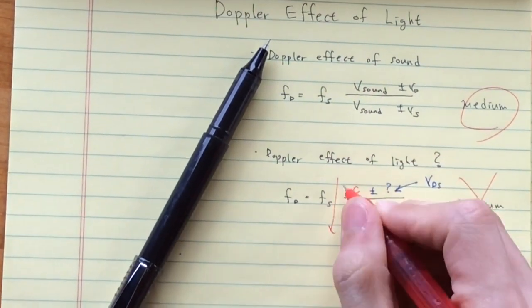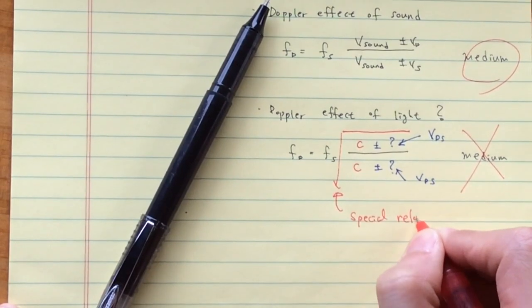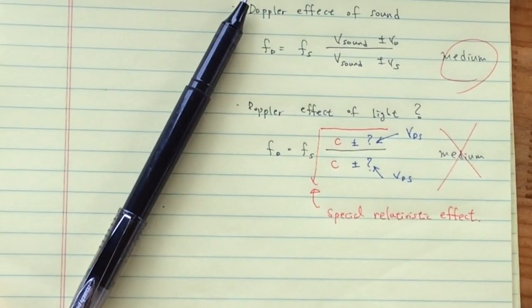So the relative velocity is used and there is a square root due to the special relativistic effect. This is the Doppler effect of light.